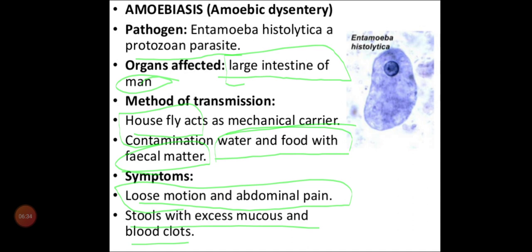Now we have finished the protozoan part. We finished bacteria — two bacteria: we learned about pneumonia and also Salmonella typhi, so typhoid fever and pneumonia under bacterium. Under virus, we learned common cold. Under protozoa, we learned about malaria and amoebiasis. That is all about the protozoa.